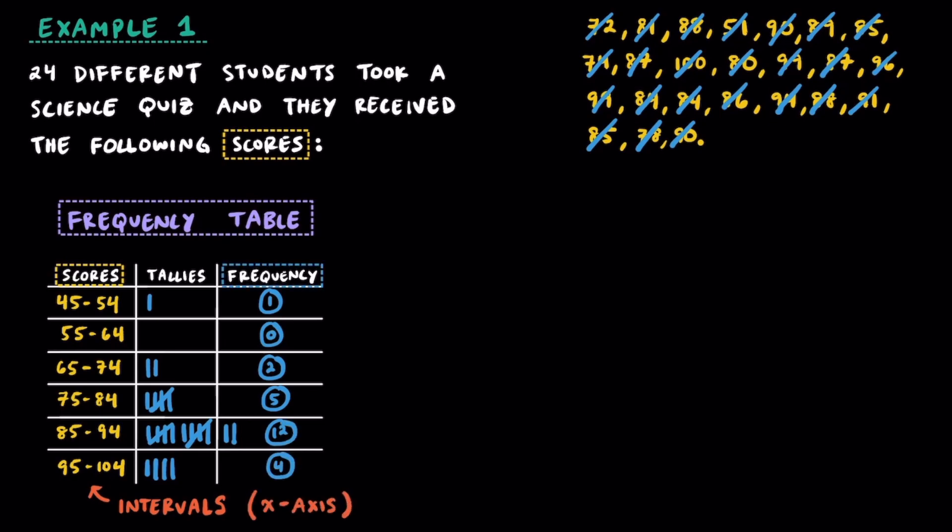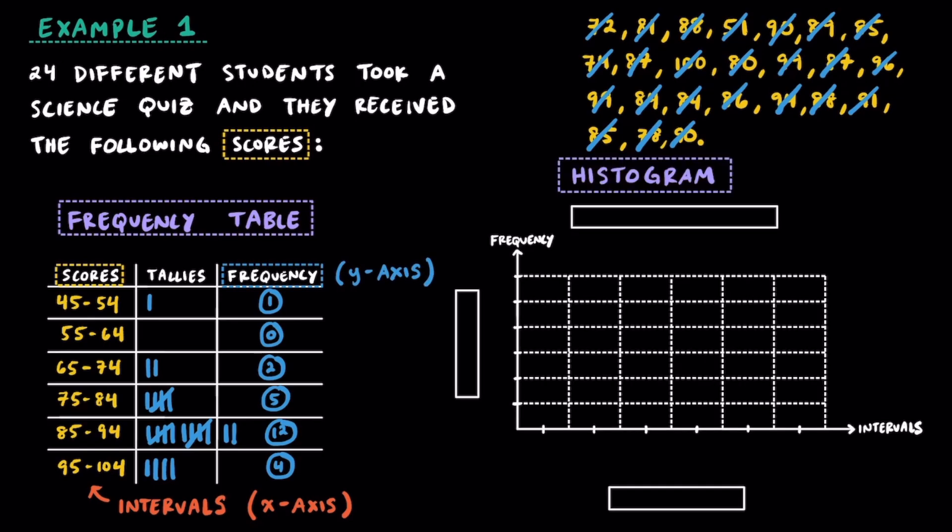Remember that the intervals is going to be along the x-axis, and the frequency is going to be along the y-axis. Now let's start putting together our histogram.